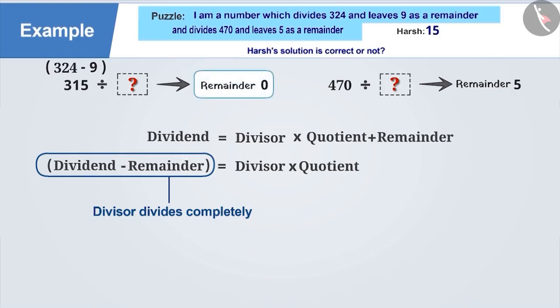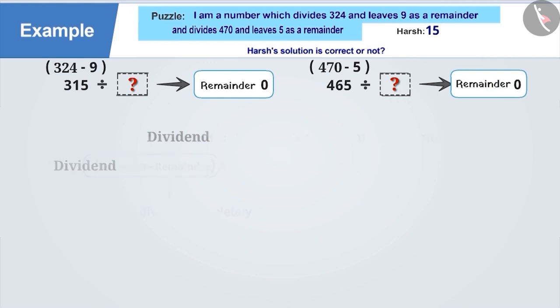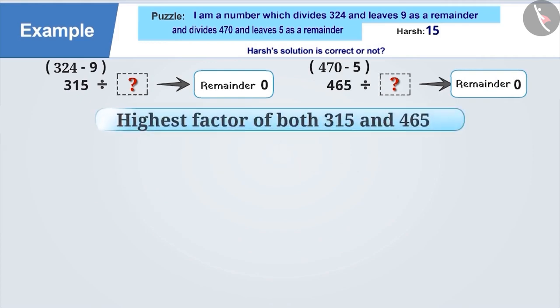Similarly, by subtracting 5 from the number 470, the number obtained will be completely divisible by the required number. That means, the required number will be the highest factor of both 315 and 465, which we call HCF.